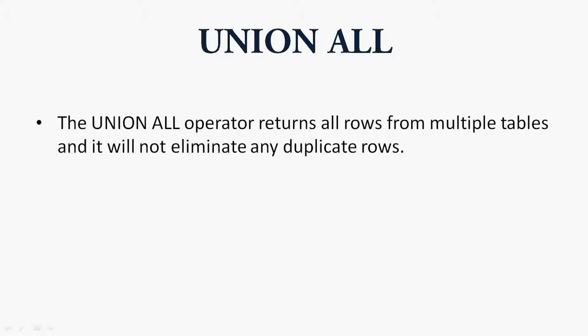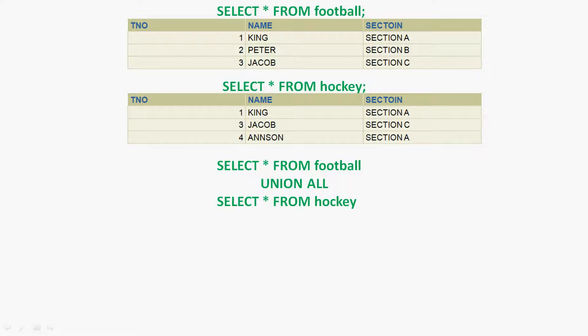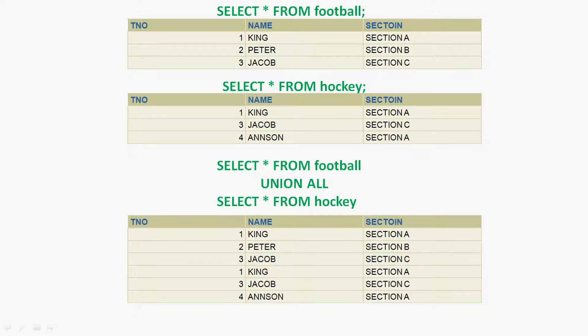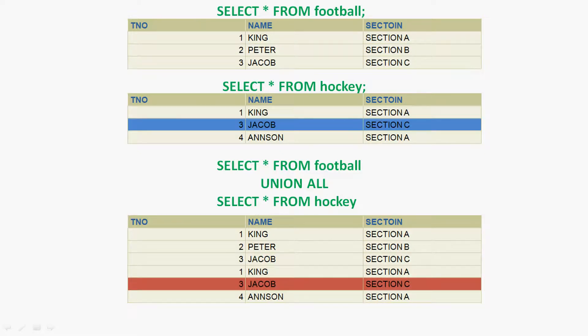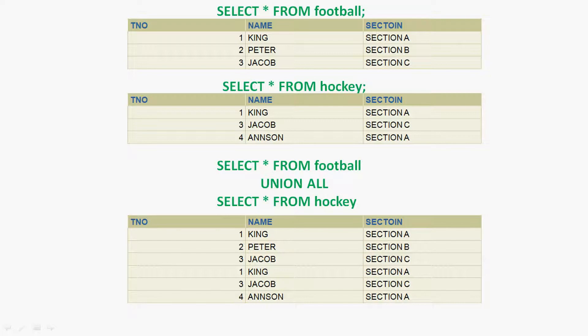Now we will see union all. The union all operator returns all rows from multiple tables and it will not eliminate any duplicate rows. Again we will consider the same tables football and hockey, and here we are going to give the query: select star from football, union all, select star from hockey. And here we can see the result. The football table has a total of three rows and the hockey table also has three rows, so after doing this union all we got a total of six rows in the result set. The result set is combined from both tables without eliminating the duplicate rows.